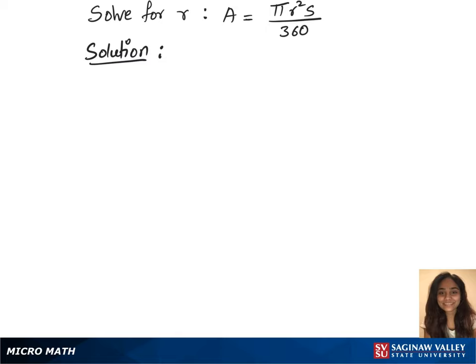To solve this question for R, we are first multiplying 360 on both sides of this equation, which gives us 360 times A equals to pi R squared S.